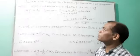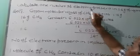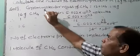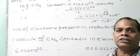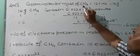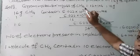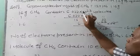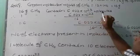Next question, my dear students: calculate the number of electrons present in 1.6 grams of methane. Methane has the chemical formula CH₄. Gram molecular mass of methane CH₄ is equal to atomic mass of carbon 12, plus atomic mass of hydrogen 1; there are 4 hydrogens, 1 × 4, which equals 16 grams. Now, 16 grams of methane contains 6.022 × 10²³ molecules.